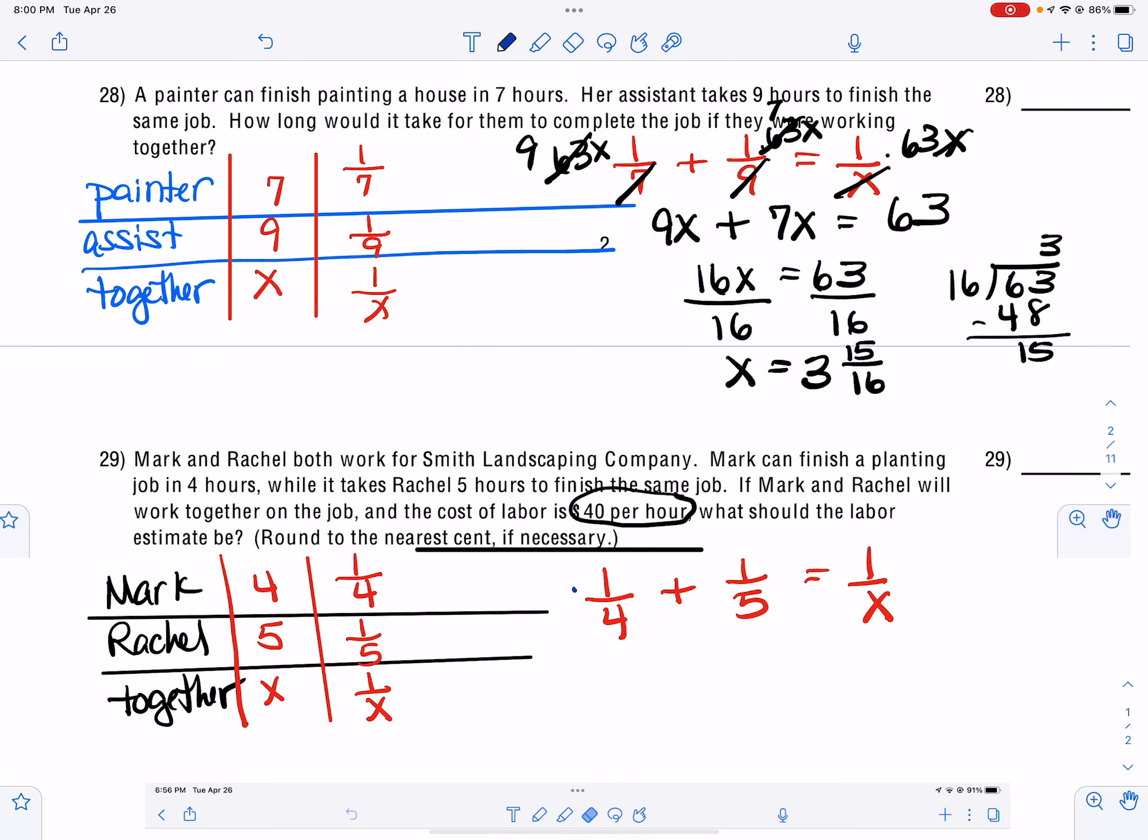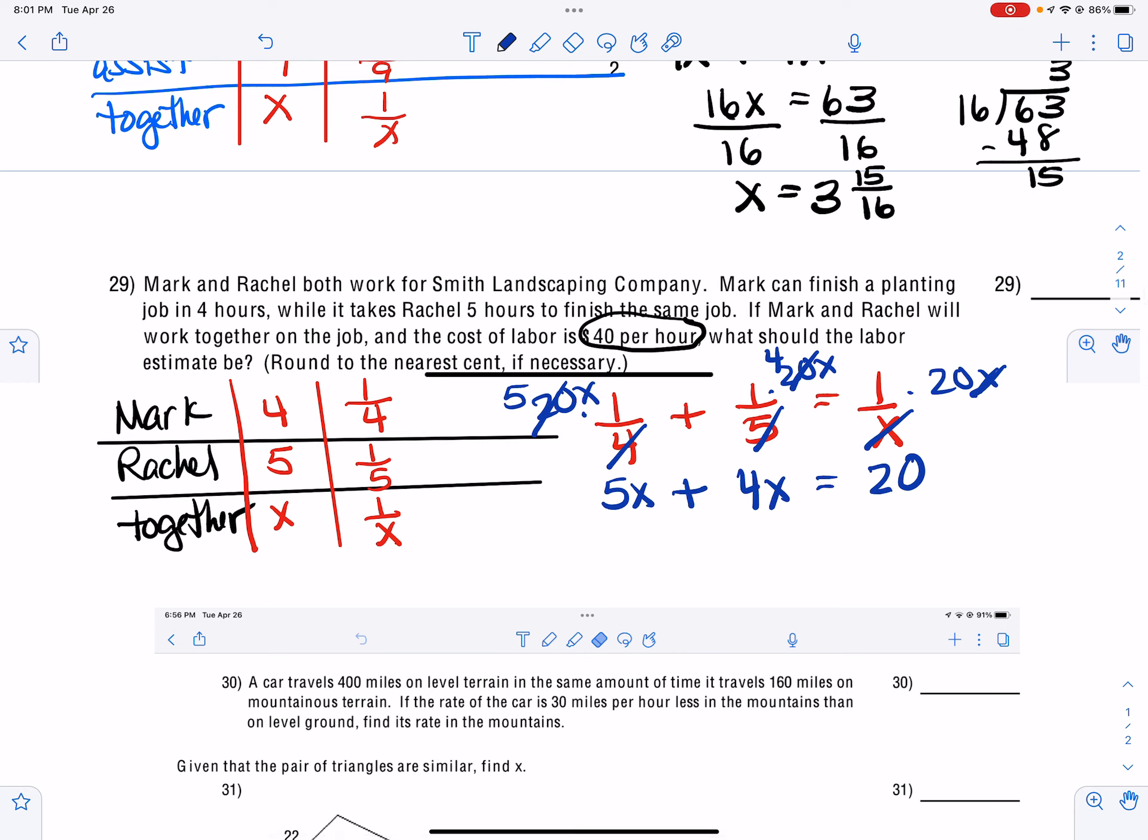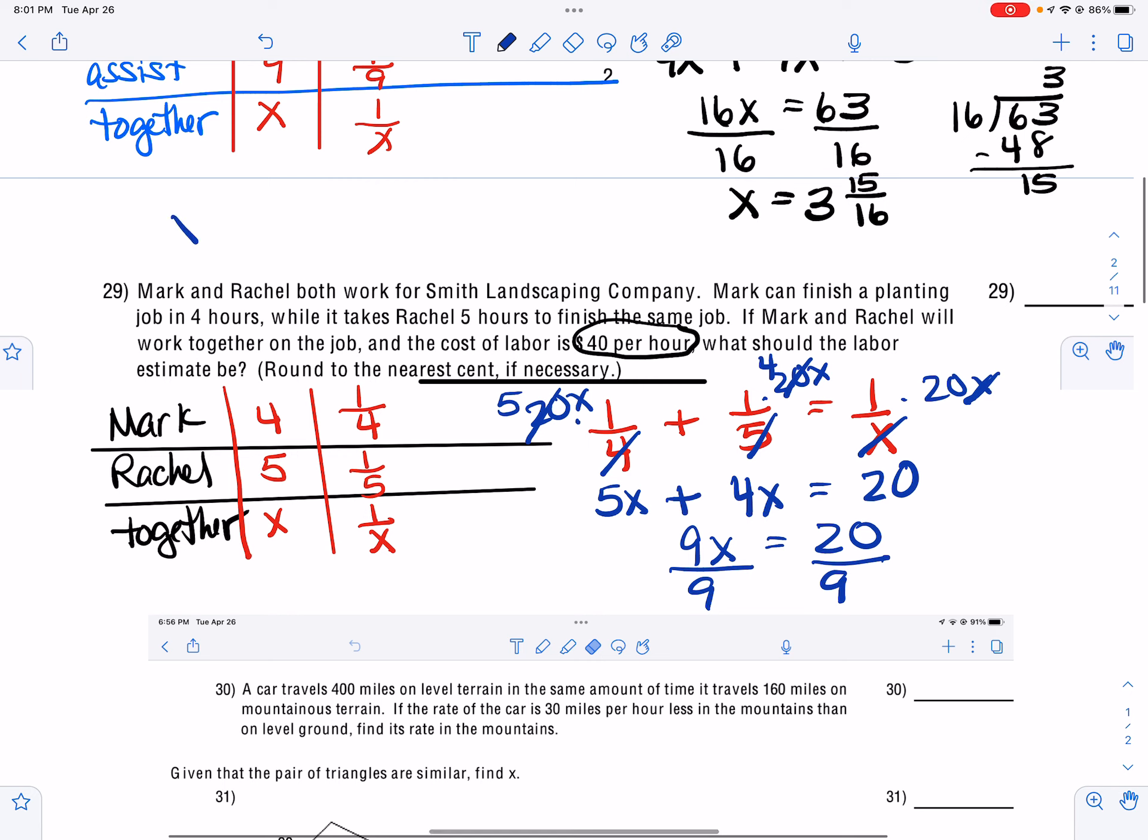And then your common denominator is going to be 20X. Everything has to be accounted for. And so 4 goes into 20 and leaves 5. So we get 5X. Five goes into 20 and leaves 4. So we get 4X. And X's cancel and we get 20. So now we have 5X and 4X makes 9X equals 20. And then we divide by 9. And so the amount of time it takes is 20 ninths hours.